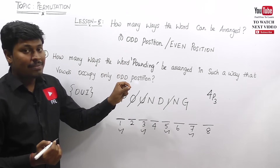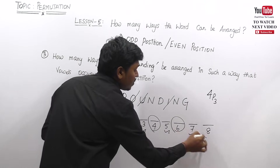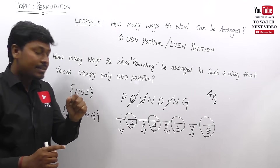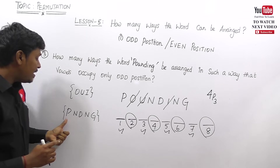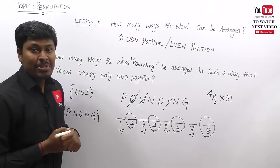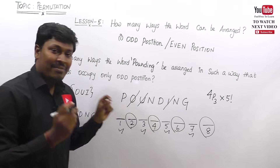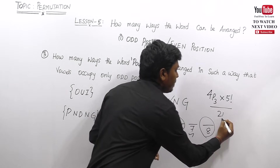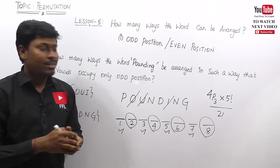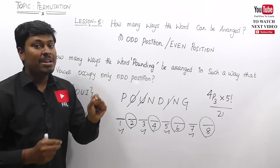Placing three vowels into four odd positions leaves one odd position remaining. The even positions are two, four, six, eight — four even positions. So there are five total remaining positions for the five consonants P, N, D, N, G, giving 5! ways. But unlike the previous cases, the letter N is repeated twice, so we divide by 2!.